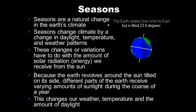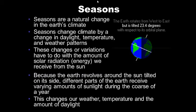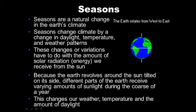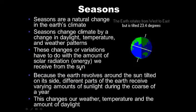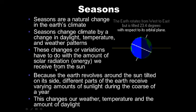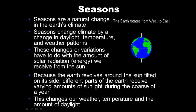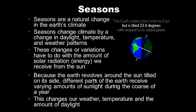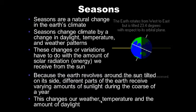Seasons are a natural change in Earth's climate. Seasons change climate through a change in daylight, temperature, and weather patterns. These variations have to do with the amount of solar radiation — light or energy — we receive from the sun. Because the Earth revolves around the sun tilted on its side, different parts of Earth receive varying amounts of sunlight during the course of a year, changing our weather, temperature, and amount of daylight.